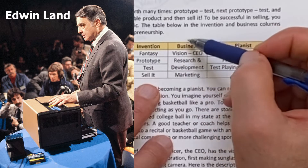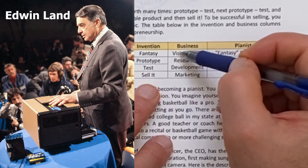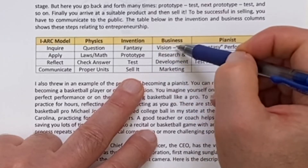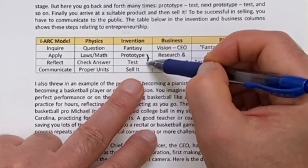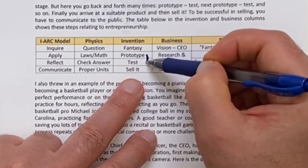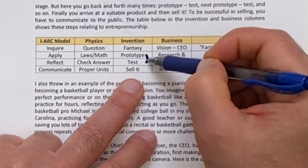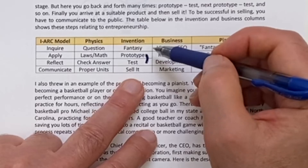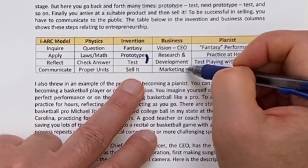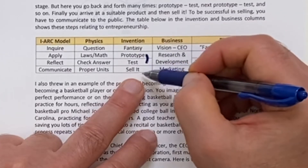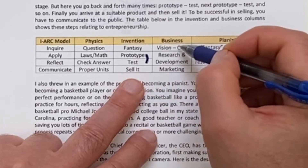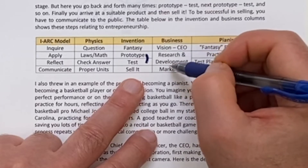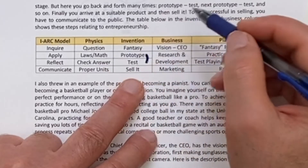Contemplation — deep thinking — is part of solving problems. You make a prototype, test it, iterate back and forth, and finally sell it, which is the communication stage. In a business context, you have the CEO's vision, then research and development where you alternate between building a model and testing it, and finally the marketing and sales division — which fits this same scheme.